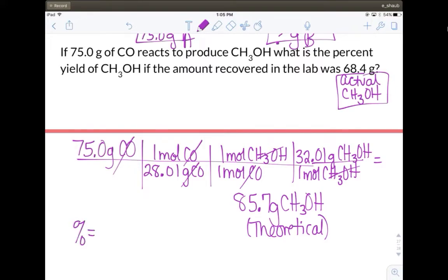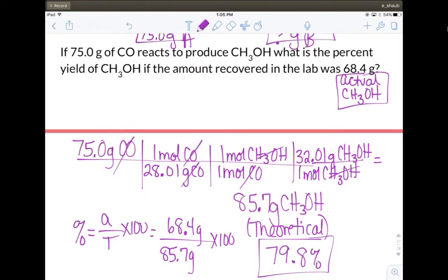However, I tell you the actual yield is 68.4. So now we're going to plug that into my percent yield. We're going to plug in the 68.4 grams over the 85.70 grams, and we're going to multiply that by 100. When we do that, we get a 79.8 percent yield. And that is my answer.